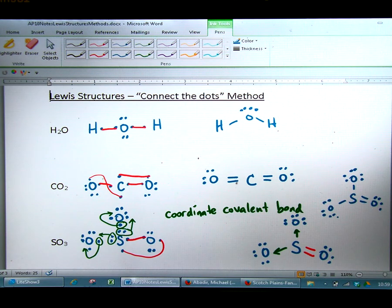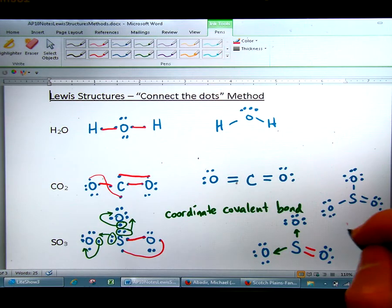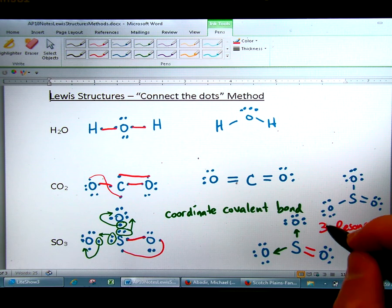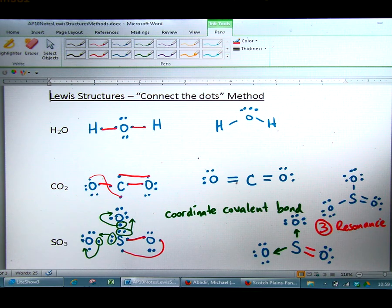And lastly, this also has what we call resonance. And resonance is where you could switch the bonds around without switching the atoms. And resonance happens because this double bond could be on the right or the left or the top. So this has three resonant structures that you could use. And this is the connect the dot method.